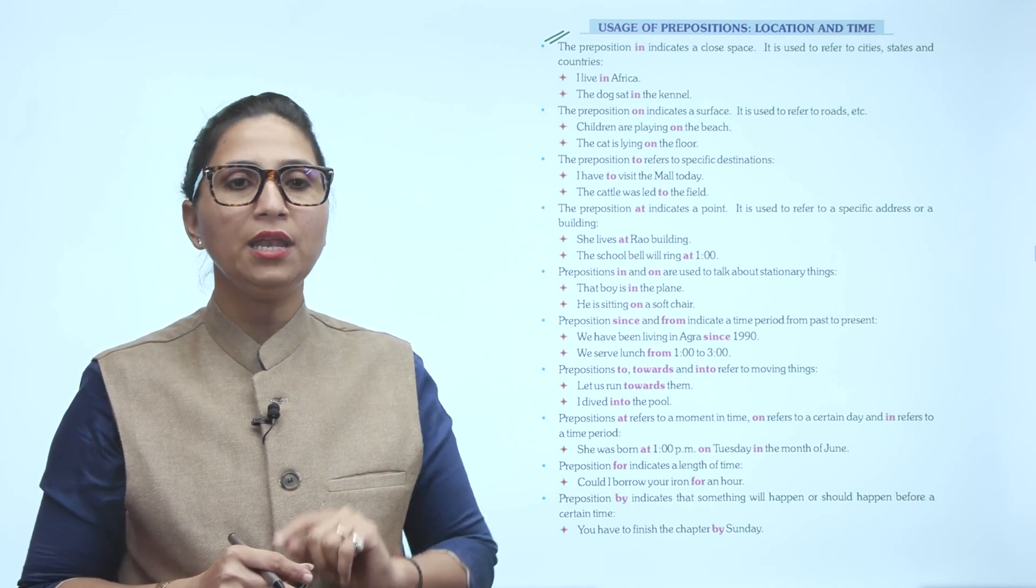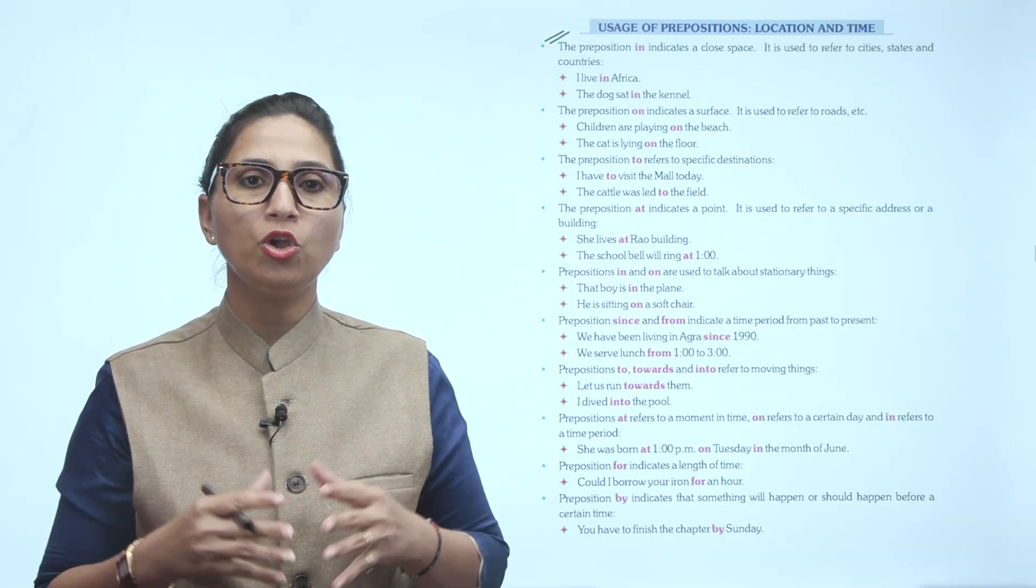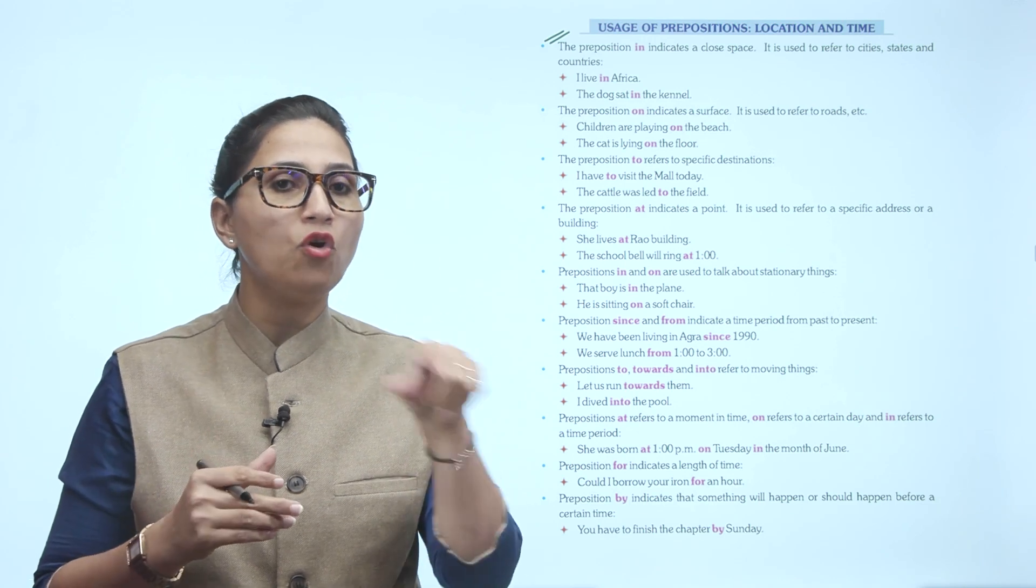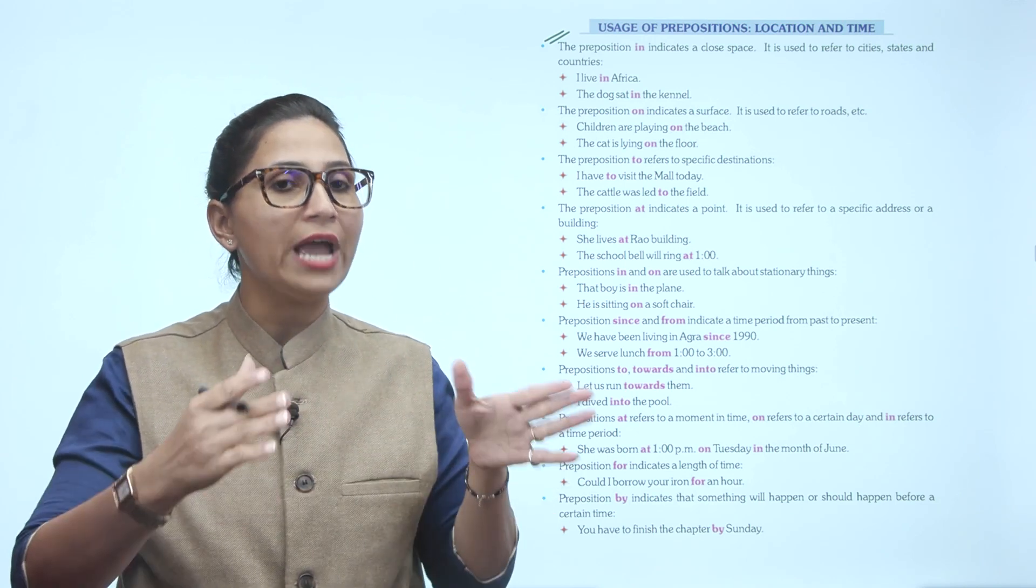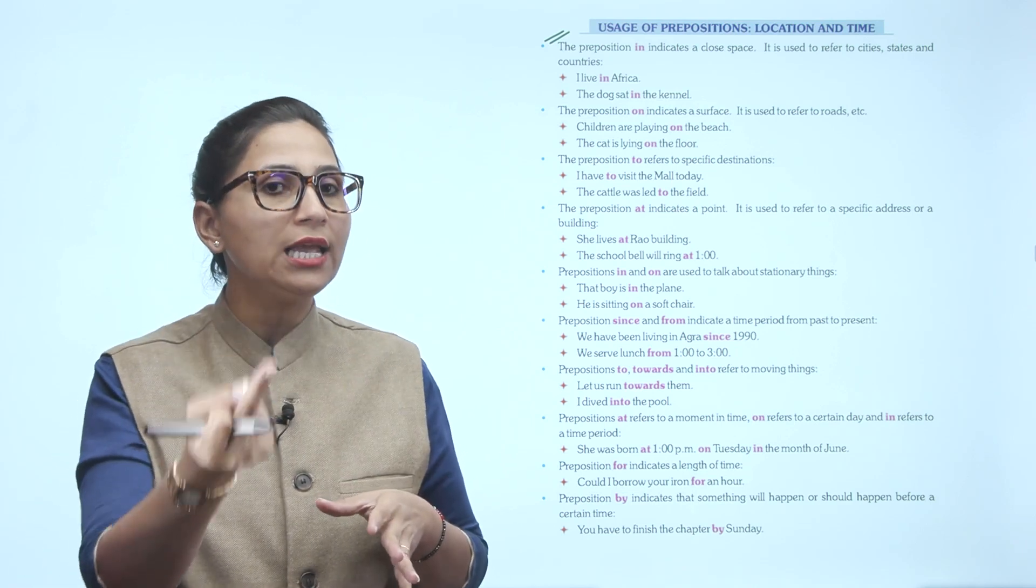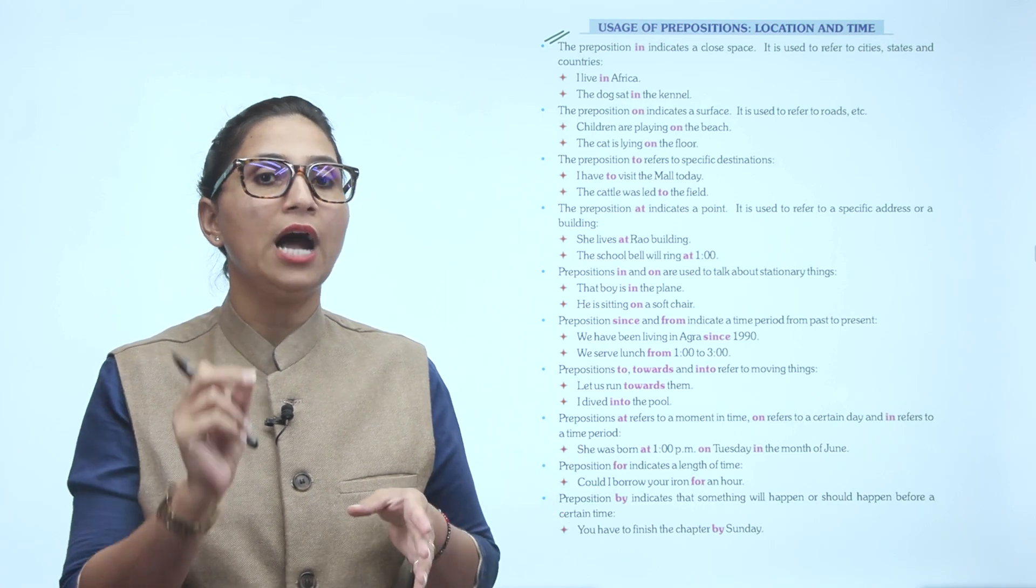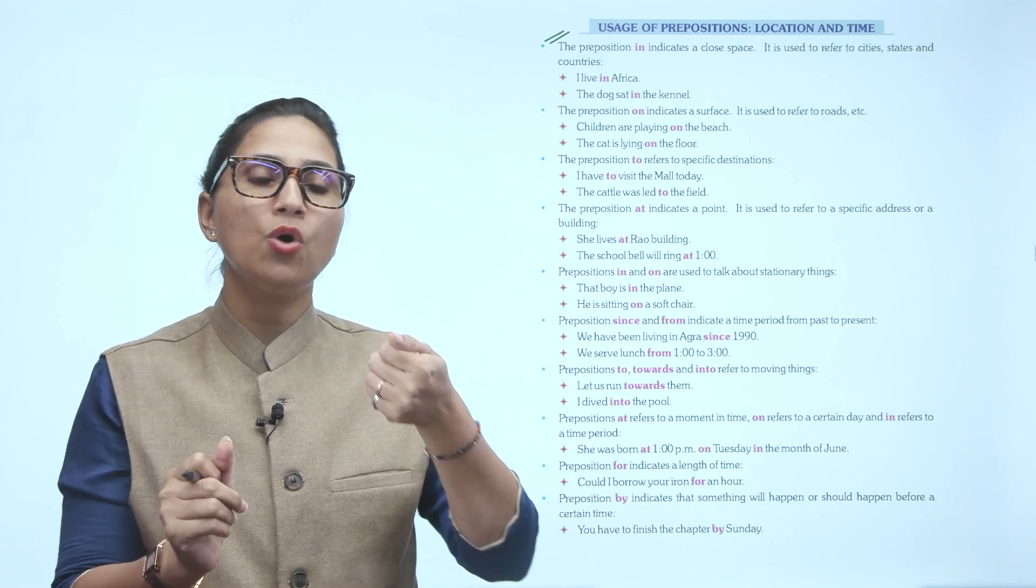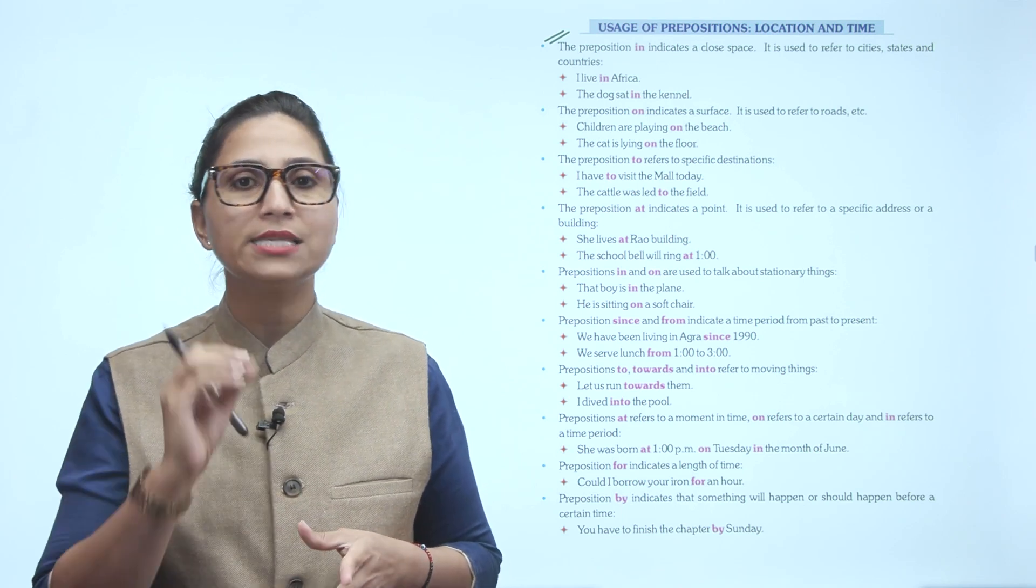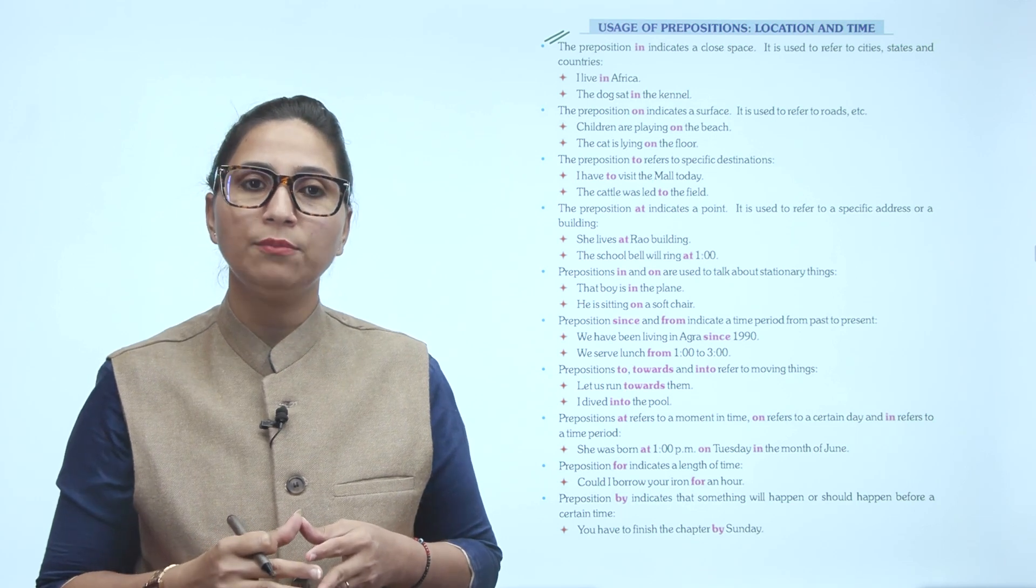Preposition FOR indicates a length of time. Could I borrow your iron for an hour? So what is FOR being used for here? It's used for length of time, like here for one hour, duration of time. Preposition BY indicates that something will happen or should happen before certain time. You have to finish the chapter by Sunday. So BY is used to indicate something will happen or should happen before a certain time, like a fixed time before which that thing should be finished.